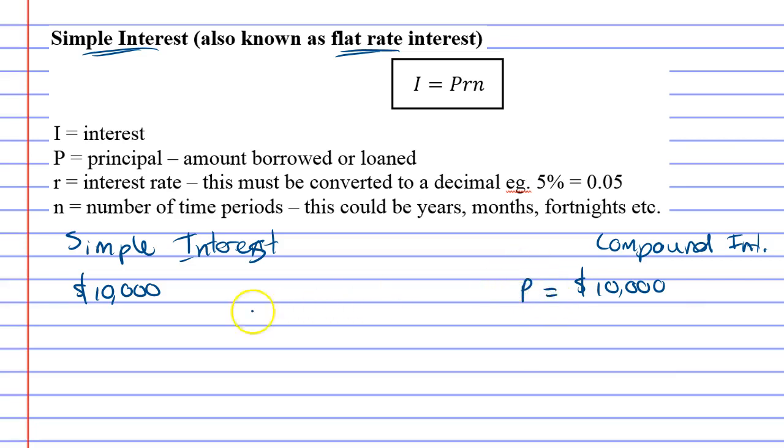The money you borrowed for this car is called your principal or P. Whenever you work with interest, principal doesn't necessarily mean a loan - it can also be an investment. Rather than borrowing 10 grand, you could have actually invested 10 grand. All the calculations work out the same. You also need an interest rate or little r, and the interest rate is a percentage, which in this case let's say it's 10 percent. That means that the bank charges you 10 percent interest, or if it was an investment you would be making 10 percent interest.